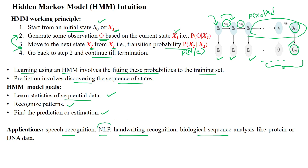In NLP, the next word is predicted by the previous word in the sentence. In speech recognition, it converts voice into text and recognizes the speech. Different applications are using the hidden Markov model.